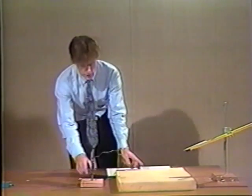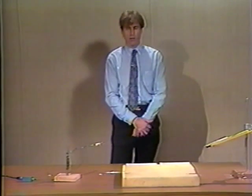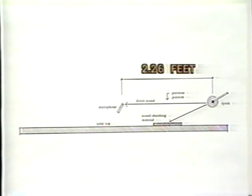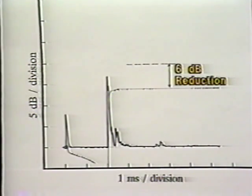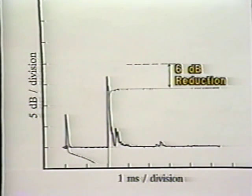Now we'll move the microphone. The distance from the spark source to the microphone has been increased to 2.26 feet. Notice the height of the pulse has decreased somewhat and the integrated energy level is six decibels less than in the previous example. The pulse arrives two milliseconds after the trigger now. As we double the distance between the spark source and the microphone, we observe the increase in time it takes for the sound to arrive as well as the six decibel decrease in sound level.